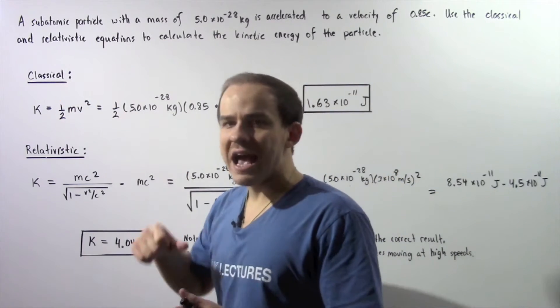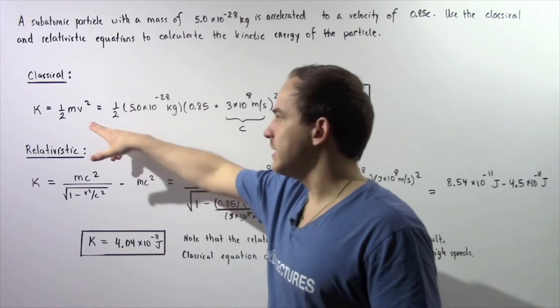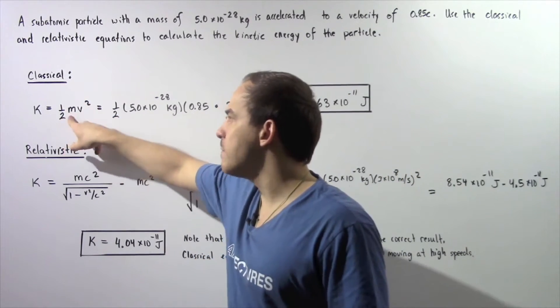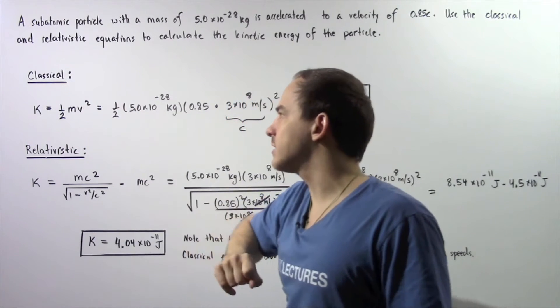Let's begin with the classical approach. The classical equation for kinetic energy of an object is given by one-half mass times velocity squared.